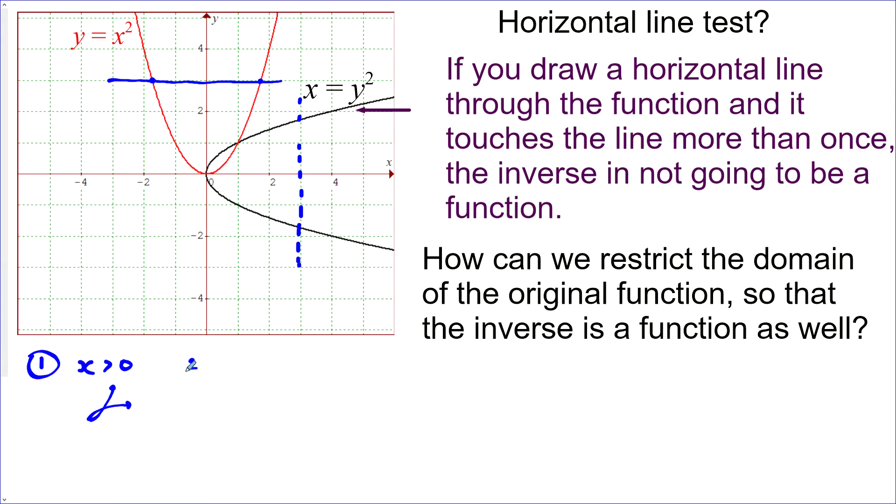Okay, option number two, we could have went the other way taking the left side of this graph, so x is less than zero. And then we would have been taking just this part of the original, and the inverse would look something like that. And so inverse passes the vertical line test and the original passes the horizontal line test.